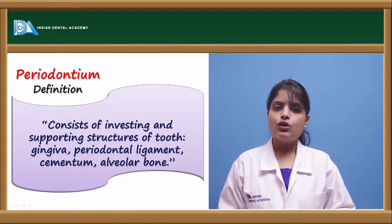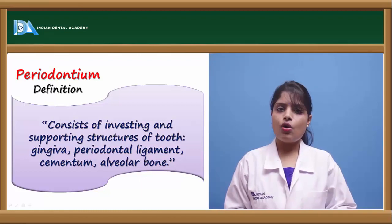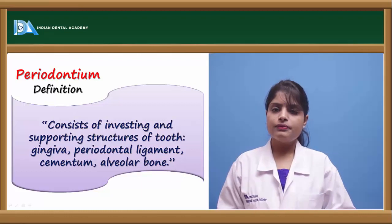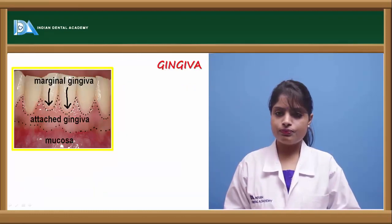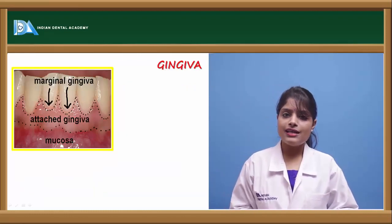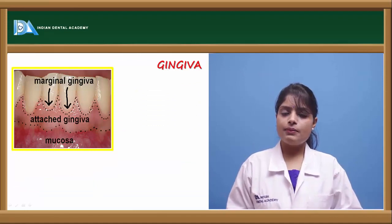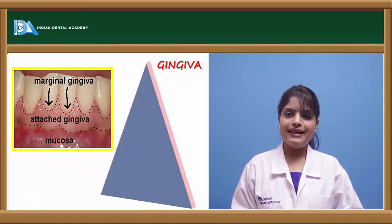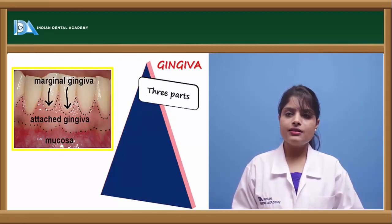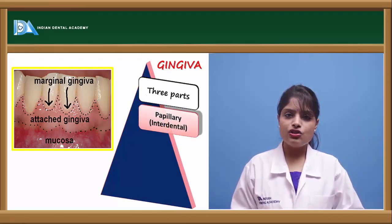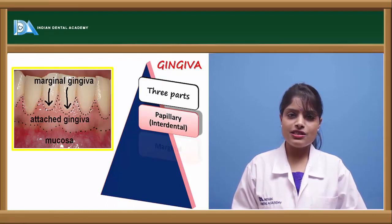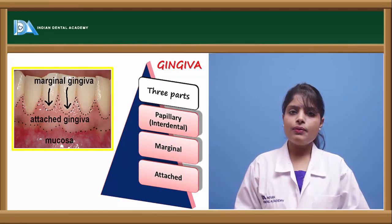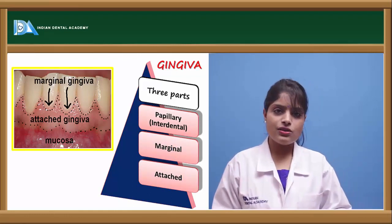This leads to a slower rate of resorption of the alveolar bone and the periodontal ligament fibers. Gingiva comprises mainly three parts: the papillary gingiva, the marginal gingiva, and the interdental gingiva. It also comprises the attached gingiva.